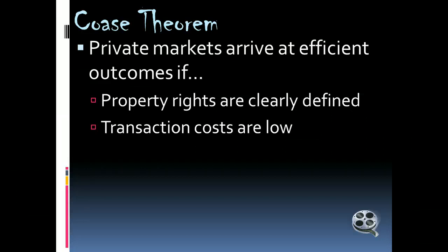For example, the Coase Theorem would say that if you're in a dorm room and your neighbor likes to play death metal at a really high volume, it's a negative externality because your neighbor doesn't take into account that it might bother you, and so he's going to produce a level of death metal beyond the socially optimal level. The Coase Theorem says we can get to a more optimal level by identifying who has the right — does your neighbor have the right to play his music, or do you have a right to sit in quiet? If your neighbor has the right, you can go to him and say you'd like to pay him to stop, covering the loss to him of listening to his music, and you could get to an optimal level that way.